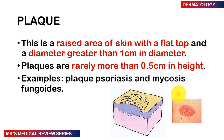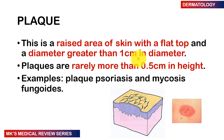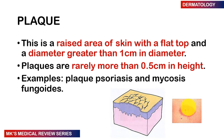Moving on to a plaque — another raised type of skin lesion. This is a raised area with a flat top, like a plateau. It has a diameter greater than one centimeter, but its height rarely exceeds 0.5 centimeters. This is seen in conditions such as plaque psoriasis and mycosis fungoides. Here is an example of what a plaque looks like, though the elevation is difficult to appreciate in two dimensions.